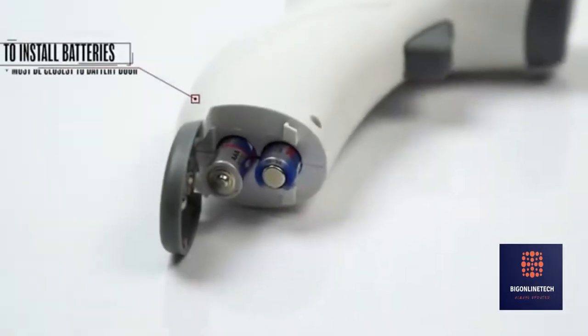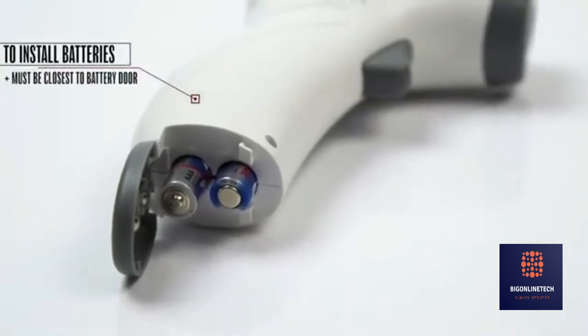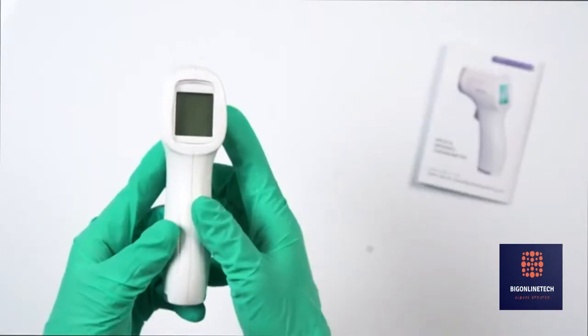To install batteries correctly, make sure the positive is touching the left side of battery door where the hinge is.